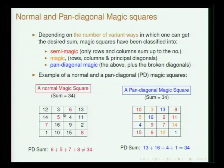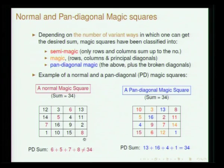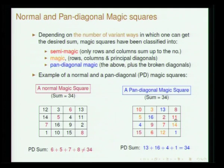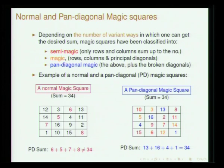For instance, taking this example: 6 plus 5 plus 7 plus 8 — once you wrap around — does not sum up to 34. This is basically a magic square where all rows, columns, and main diagonals sum up to 34, but this pan-diagonal does not sum up to 34. But in a pan-diagonal magic square, you can see that 13 plus 16 plus 4 plus 1 is 34, or 14 plus 12 plus 5 plus 3 is 34, or 10 plus 6 plus 7 plus 11 is 34 — all of them sum up to 34. Indians have specialized in constructing pan-diagonal magic squares, and Narayana Pandita presents various methods to obtain them.